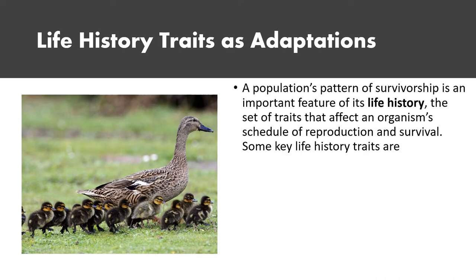Different organisms have different life histories — what happens in the life of an organism, how many offspring do they have, and are they likely to survive when young. Life history includes the pattern of survivorship, the schedule of reproduction and survival, and how many times they reproduce in their life.